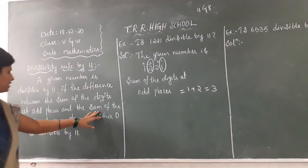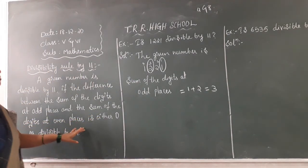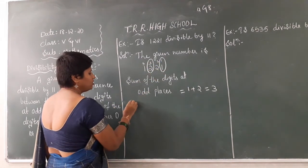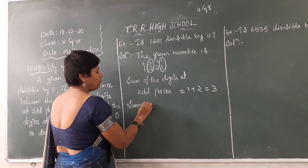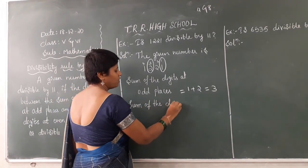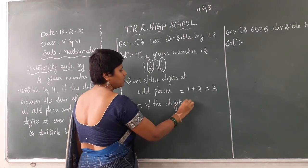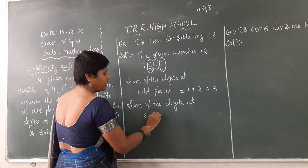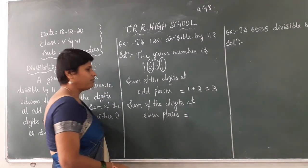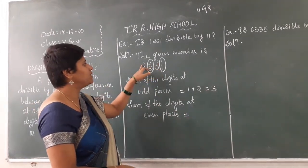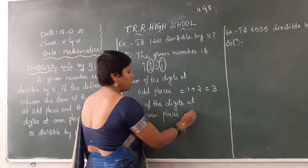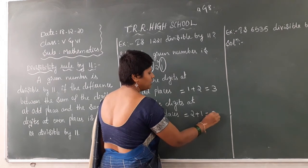Now similarly find the sum of the digits at even places. What are the values in even places 2 and 4? They are 2 and 1. So you add up: 2 plus 1 equals 3.